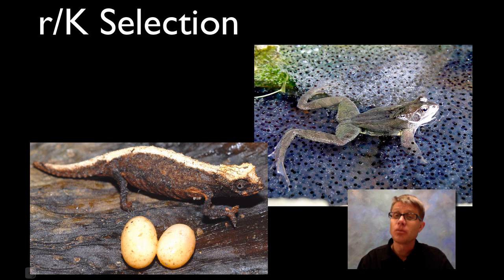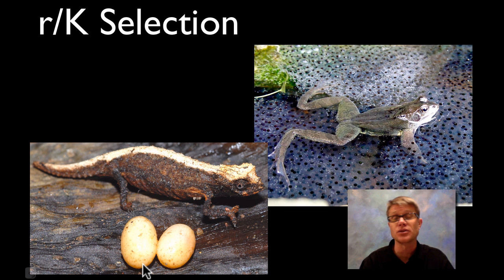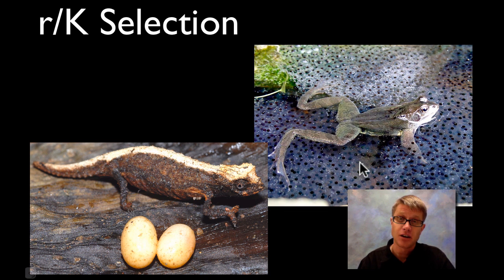Let's go back and look at that first slide. The chameleon — is it R or K selected? It's investing in just these two eggs, so it's in it for the long haul — K selected. Whereas the frog would be R selected. I hope that's helpful.